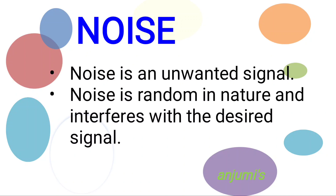The predictable form of noise can be easily identified, estimated, as well as eliminated by adopting various methods. However, the unpredictable form of noise is time-dependent and varies randomly as time changes. Thus this noise is uncontrollable, and generally the term noise is used only to define unpredictable or random noise. Noise can be broadly classified into two types.